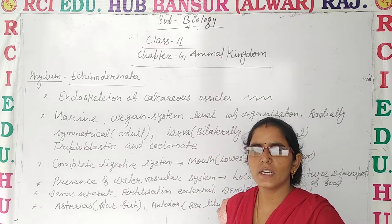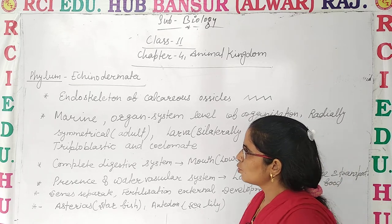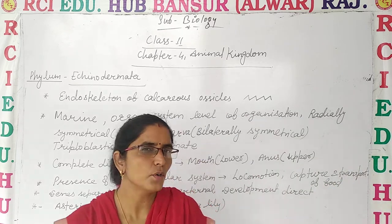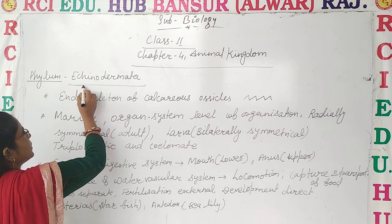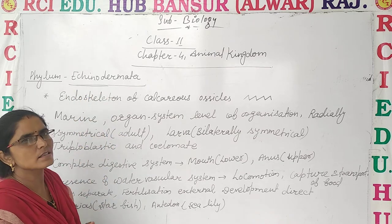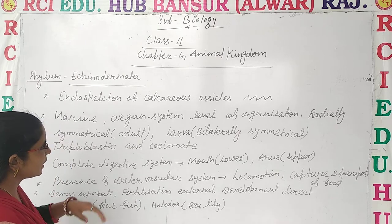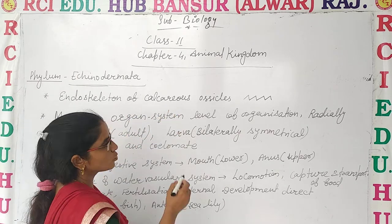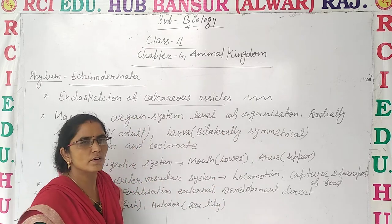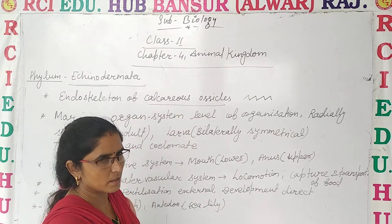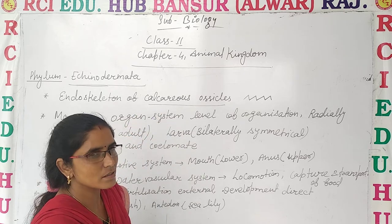Today let's discuss about the next phylum, that is Echinodermata. As the name suggests, the name is given because they have a calcareous endoskeleton — they have an endoskeleton of calcareous ossicles. That's why the phylum is named Echinodermata. It means calcareous ossicles.